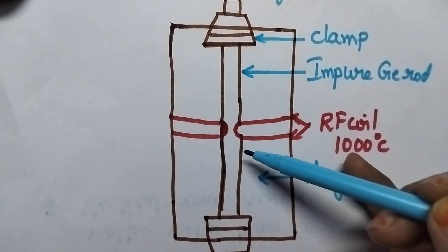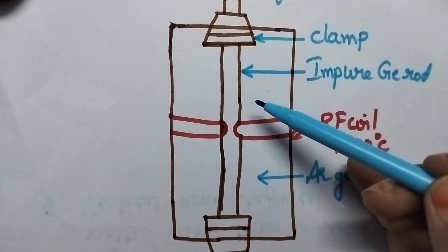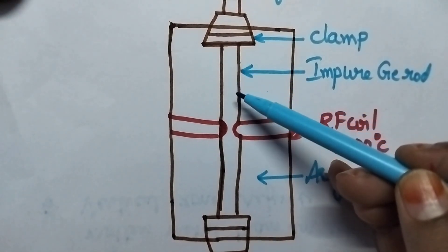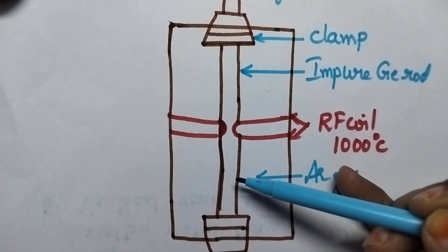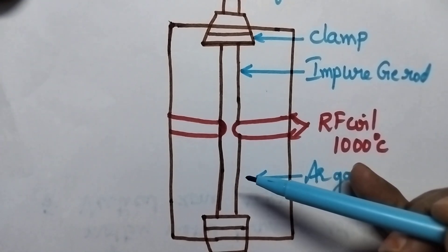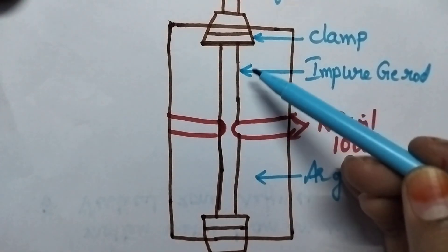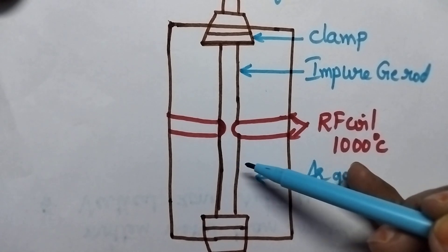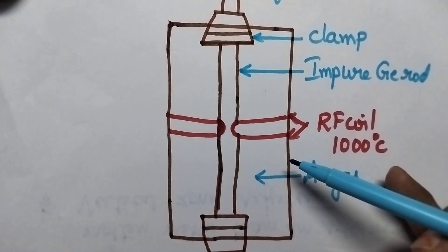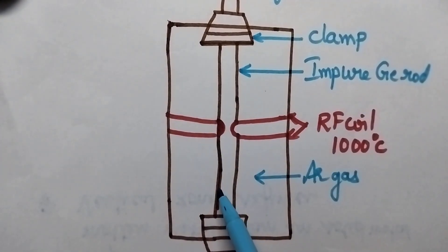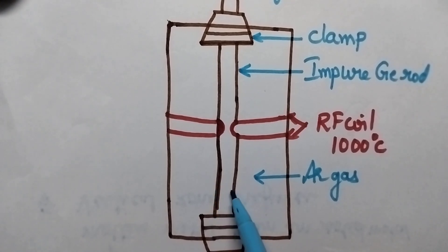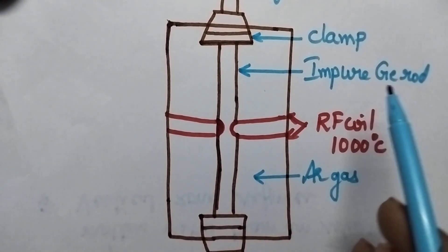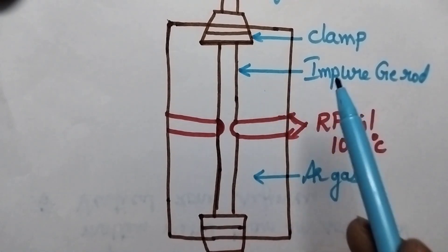In this way, the process is repeated a number of times so that we will get the desired purity levels. After completing the process, the germanium rod is removed from the clamp and the bottom part consists of impurities. Hence, it is removed from the germanium rod to get the pure germanium.